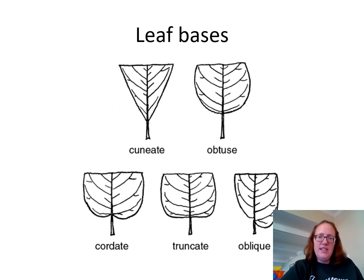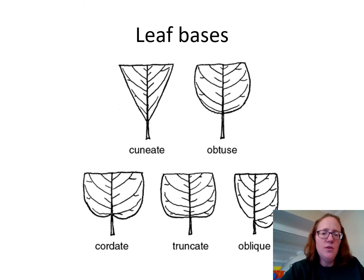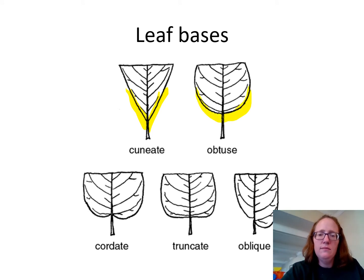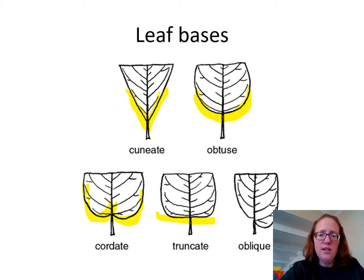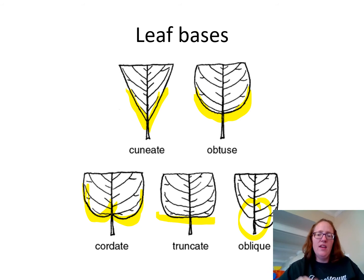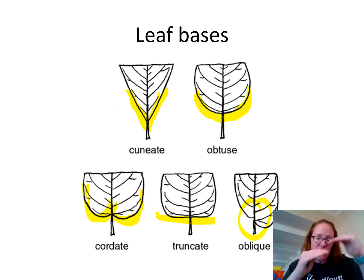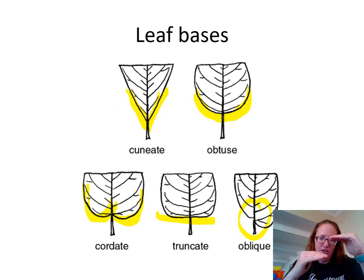The next characteristic you need to know is the base of the leaf — what the base looks like. Cuneate means it's triangular at the bottom. Obtuse means it's rounded. Cordate means it comes up in the middle. Truncate is straight across. And oblique happens when the two sides of the leaf don't match up — one side comes in up high and the other comes in lower, so they're offset from each other.